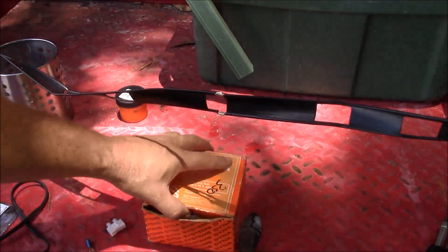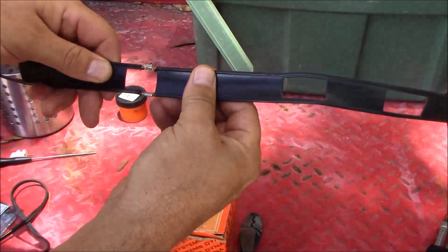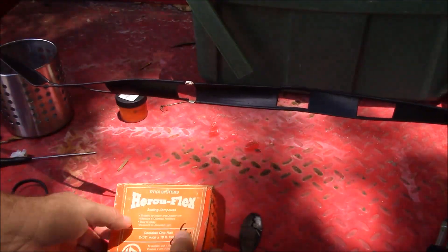Now that I've flooded the connection with solder, and we have a good electrical connection, a strong mechanical connection, I'm going to go ahead and seal that with self-fusing tape, just like this Herkyoflex here.